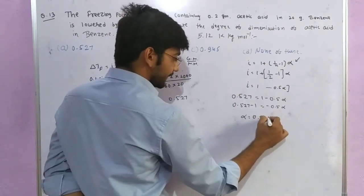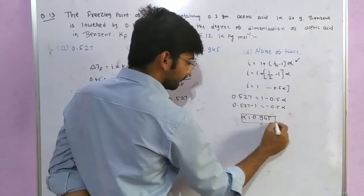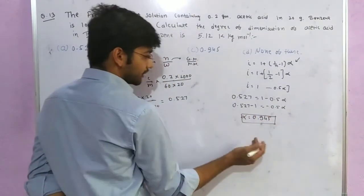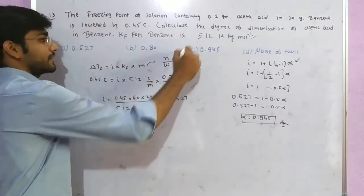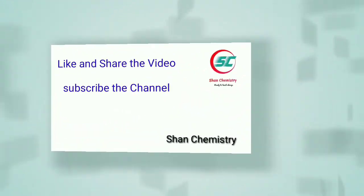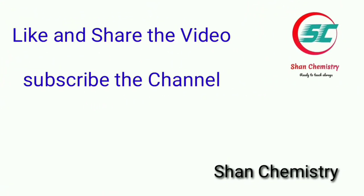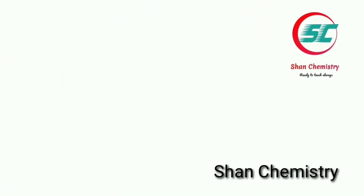This gives alpha equals 0.945. So the degree of dimerization is 0.945. Checking the options, the correct answer is 0.945.